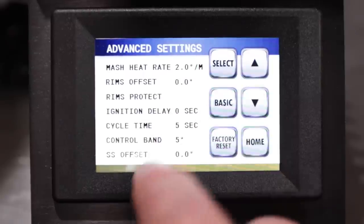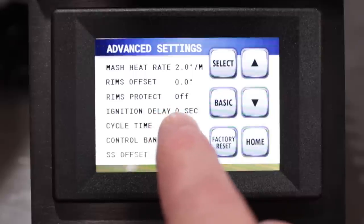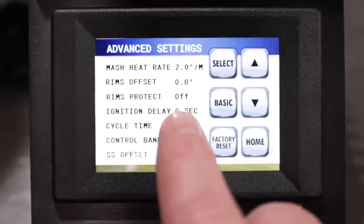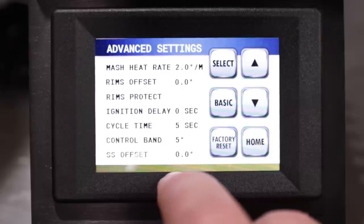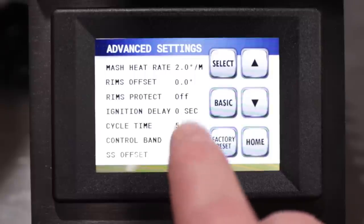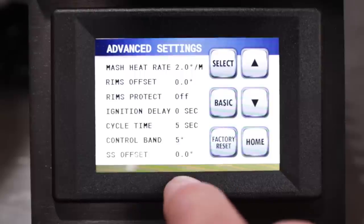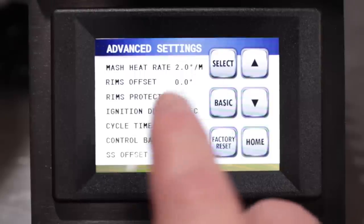RIMS protect is another feature. What that is, is basically when you start your mash in a RIMS system, if you for any reason turn the pump off, it will actually kill the heat to the element. That is a protection so that you don't scorch the mash in your RIMS tube. It's not really necessary for a HERMS system, but if you're doing a RIMS system or even a brew in a bag system, that would be a possible option that you'd want to enact.